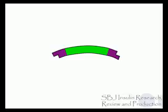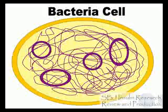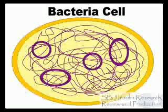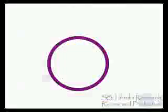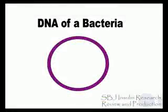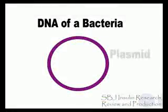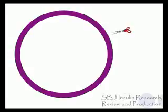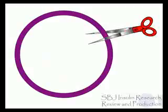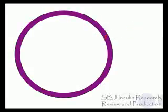Here is the insulin gene. This is a cell of a bacteria, another type of organism. In bacteria, some of the DNA is in circles. These are called plasmids, and we can use them to insert a gene into the bacteria. In order to insert the insulin gene into the plasmid, we need to cut the plasmids with restriction enzymes, or the scissors.